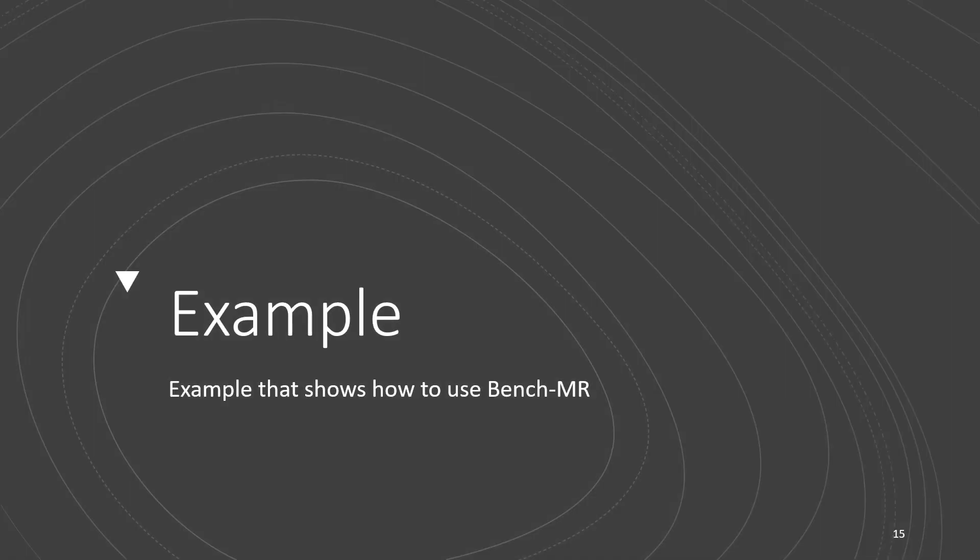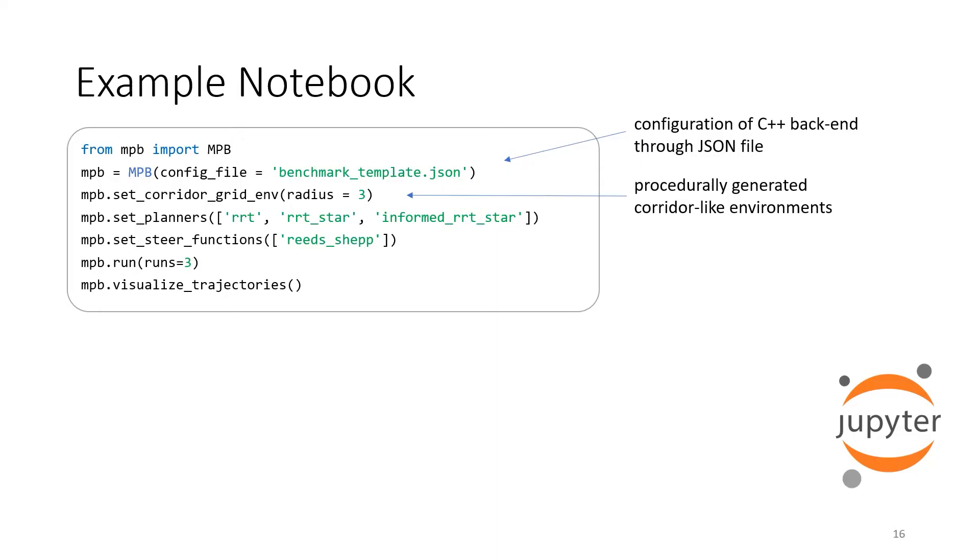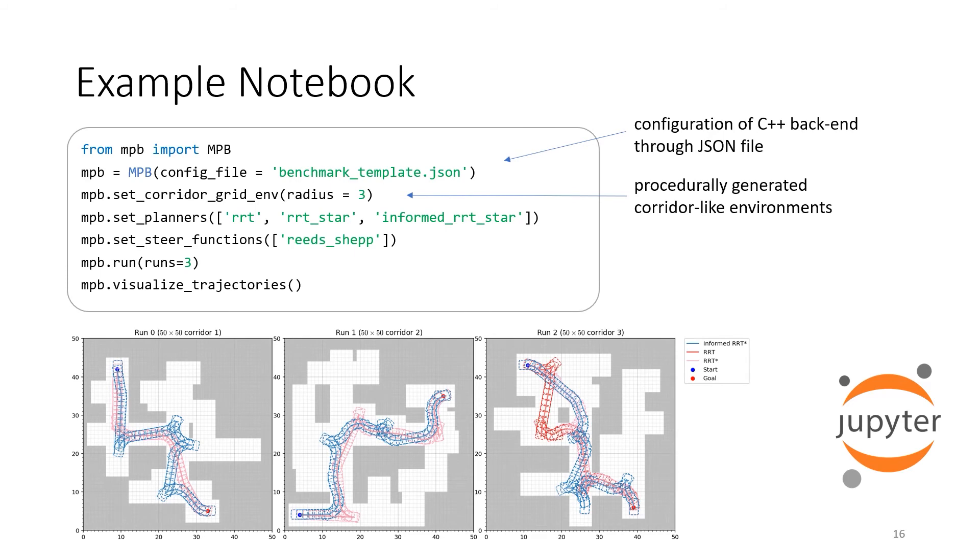Let's take a look at an example on how to use BenchMR. Here you can see an experiment defined in a Jupyter notebook cell. We first create an MPB instance which manages the benchmark settings. We define the name of the benchmark run, specify the environment, select the planners to evaluate, and a steer function. Finally, we run the benchmark and visualize the trajectories.